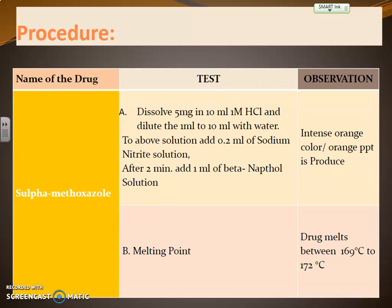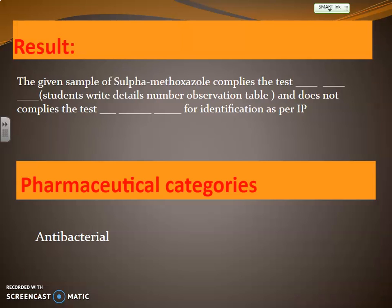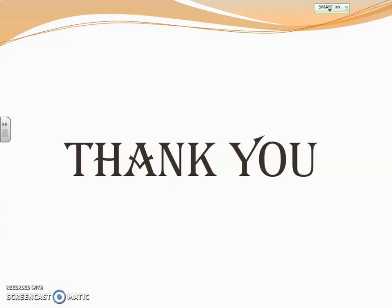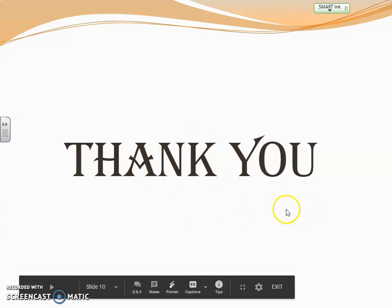The second identification test is the melting point: the drug melts between 169 to 172 degrees Celsius. So we perform one chemical identification test and one physical constant test (melting point). The results: the given sample of sulfamethoxazole either complies or does not comply with the test — the student must report this result based on observations. The pharmaceutical category of sulfamethoxazole is antibacterial. Thank you for watching this identification test, which is part of a practical.